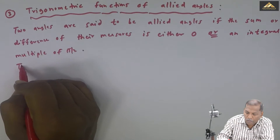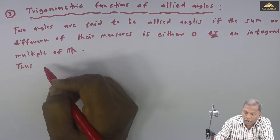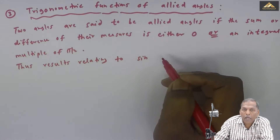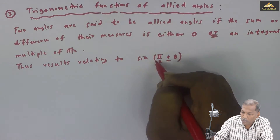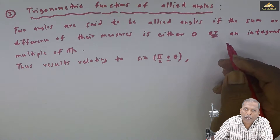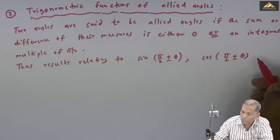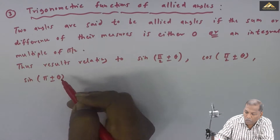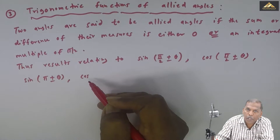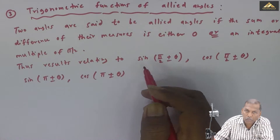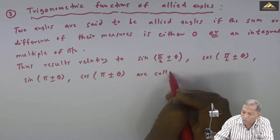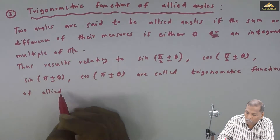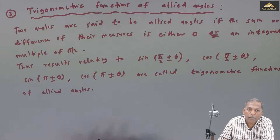So the results relating to sin of pi by 2 plus or minus theta, cos of pi by 2 plus or minus theta, and so on are called trigonometric functions of allied angles. Now we will see some related important formulae.